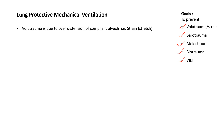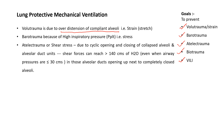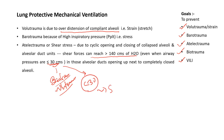Volutrauma is due to overdistension of compliant alveoli because of excessive linear strain. Barotrauma results from high inspiratory pressure — the stress factor. Atelectrauma or shear stress occurs due to cyclic opening and closing of collapsed alveoli and alveolar duct units, generating shear forces that can reach up to 140 cmH2O. Even keeping plateau pressure below 30 cmH2O helps prevent barotrauma and volutrauma, but will not prevent shear stress. Simply limiting plateau pressure to less than 30 cm does not guarantee prevention of ventilator-induced lung injury.